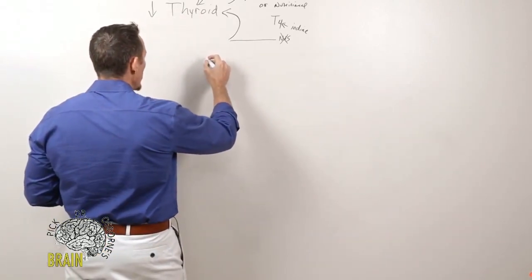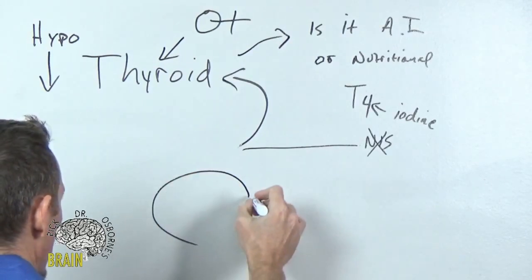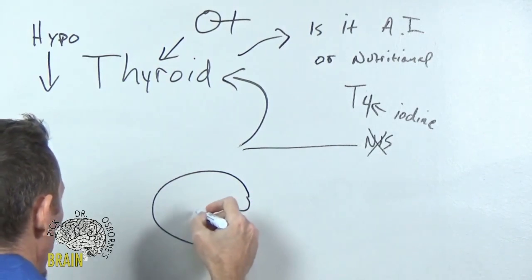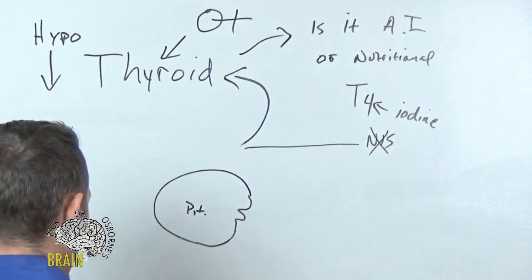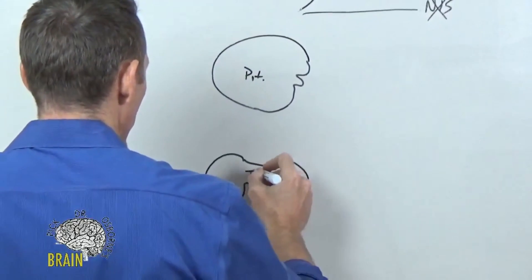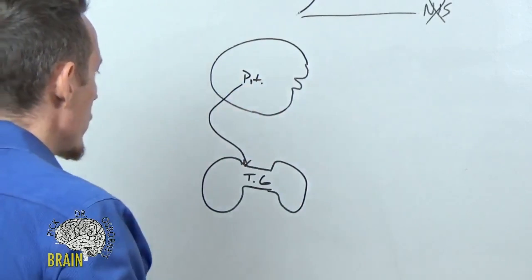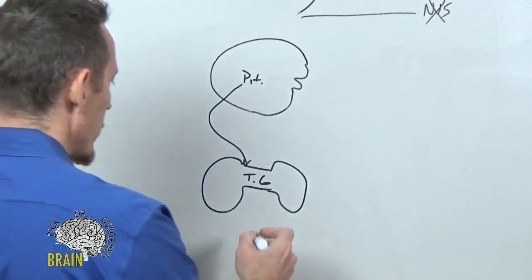In your brain - I'm a pretty terrible artist so we're just going to draw a picture of a head here - you have your pituitary gland. In your pituitary gland, part of its job is to send a message to your thyroid gland. So the pituitary sends a message to your thyroid gland and asks your thyroid gland to produce T4.